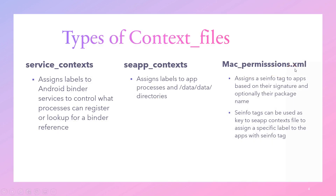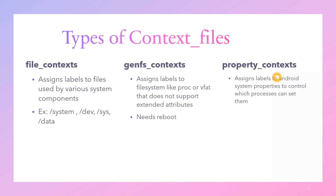Next is mac_permissions.xml. This assigns an SE info tag to apps based on their signature and optionally their package name. SE info tags can be used as a key in SE context files to assign a specific label to apps with SE info tags. Whenever we want to give a specific label for every application, we mention that application in this XML file along with their SE information tags. System server uses this information during startup.